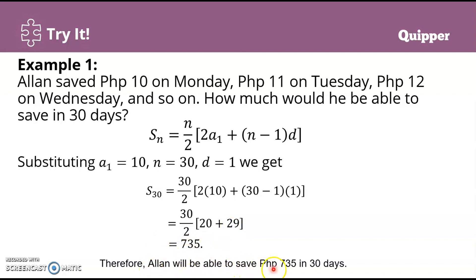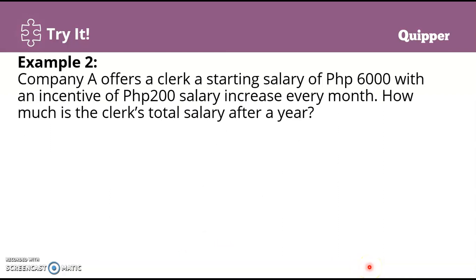Another example: Company A offers a clerk a starting salary of 6,000 pesos with an incentive of 200 pesos salary increase every month. How much is the clerk's total salary after a year? So total salary after 12 months. Of course, they start with 6,000 pesos, and every month the 6,000 increases by 200.